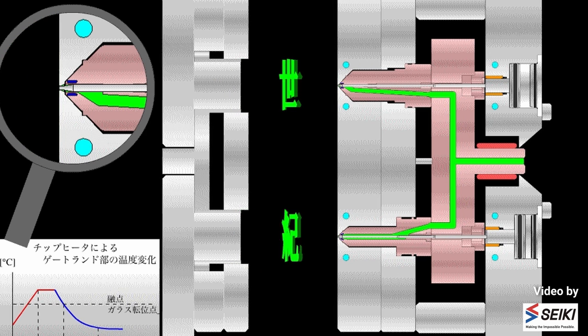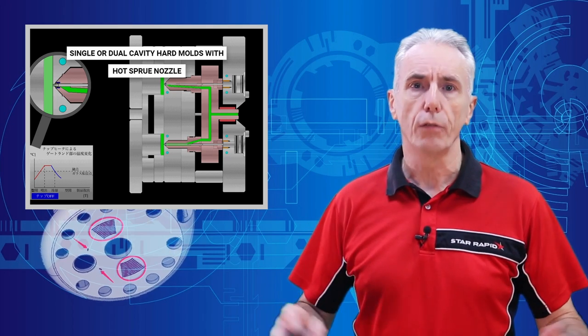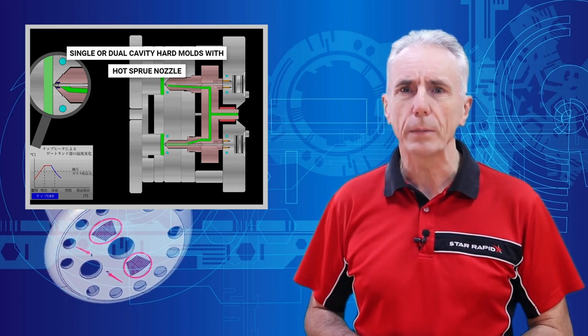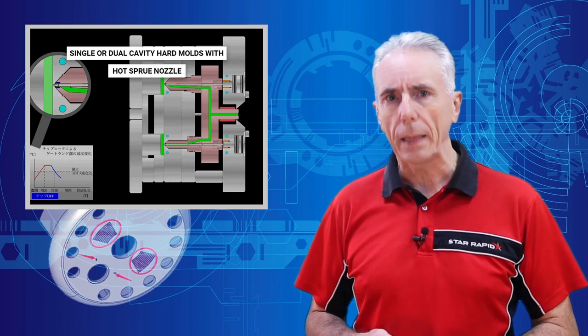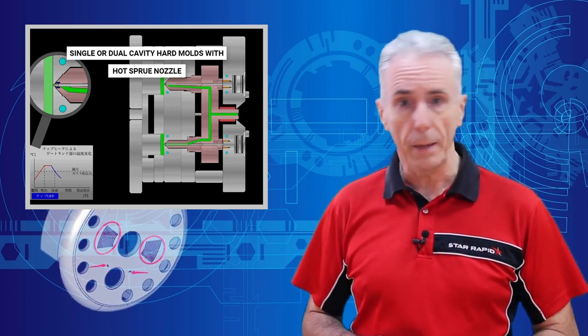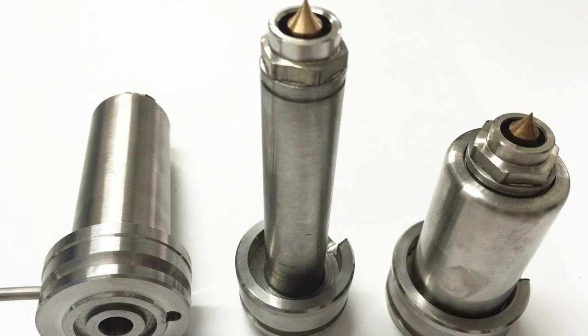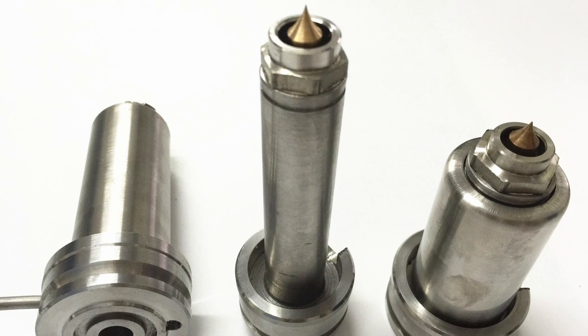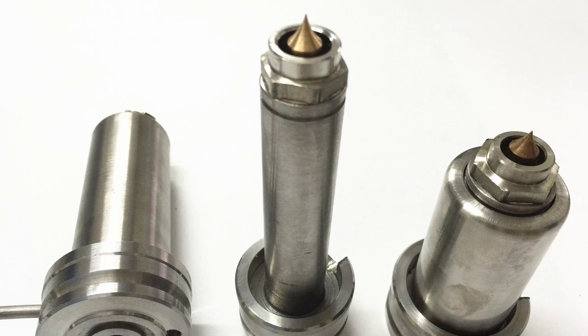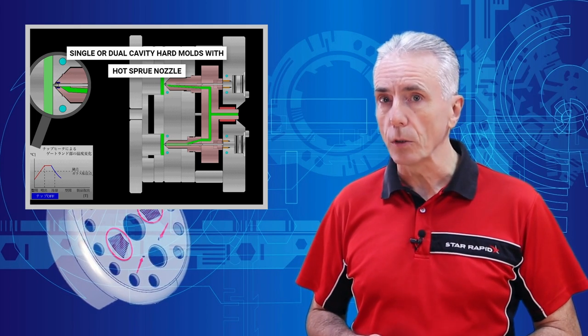Often made from hardened H13, pre-hardened P20, NAC-80, S136, or 420. There's just so many material options, each has its own application, so be sure to ask your tool maker which materials they recommend. Once we're using hardened tool steel, we almost always add a hot sprue nozzle or a simple hot runner to avoid waste. A single cavity hardened mold is typically good for one million or more cycles.